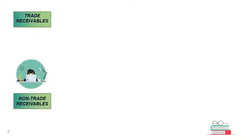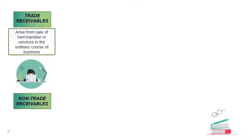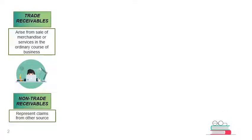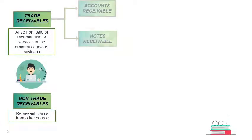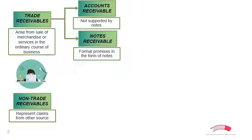Receivables can be classified either as trade or non-trade. Trade receivables are those that arise from sale of merchandise or services in the ordinary course of business. Non-trade receivables are those that arise from other sources. Trade receivables include accounts receivable and notes receivable. Accounts receivable are not supported by notes, whereas notes receivable are formal promises in the form of notes.